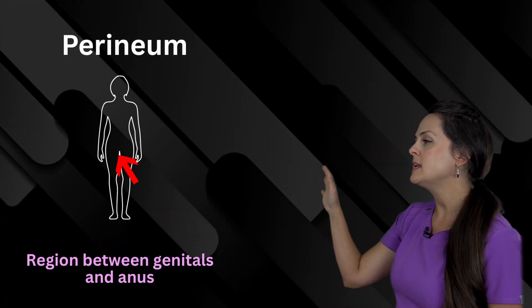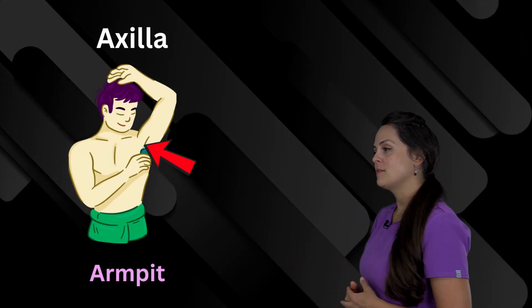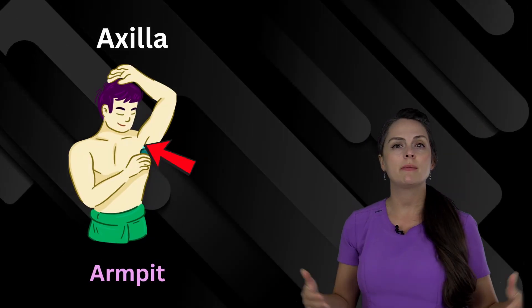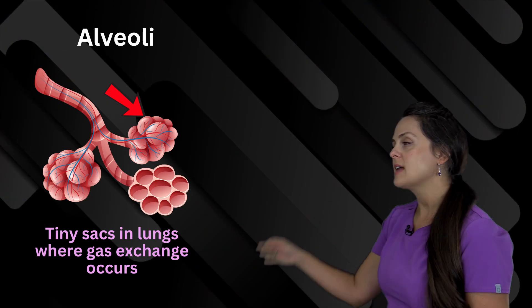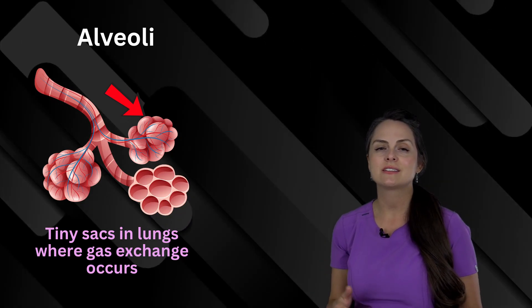This word is perineum, and it's the area between the anus and the genitals. Followed by that is the axilla, and whenever someone's talking about the axilla they're talking about the armpits. This word is alveoli, and this is the tiny sacs in your lungs where gas exchange occurs.